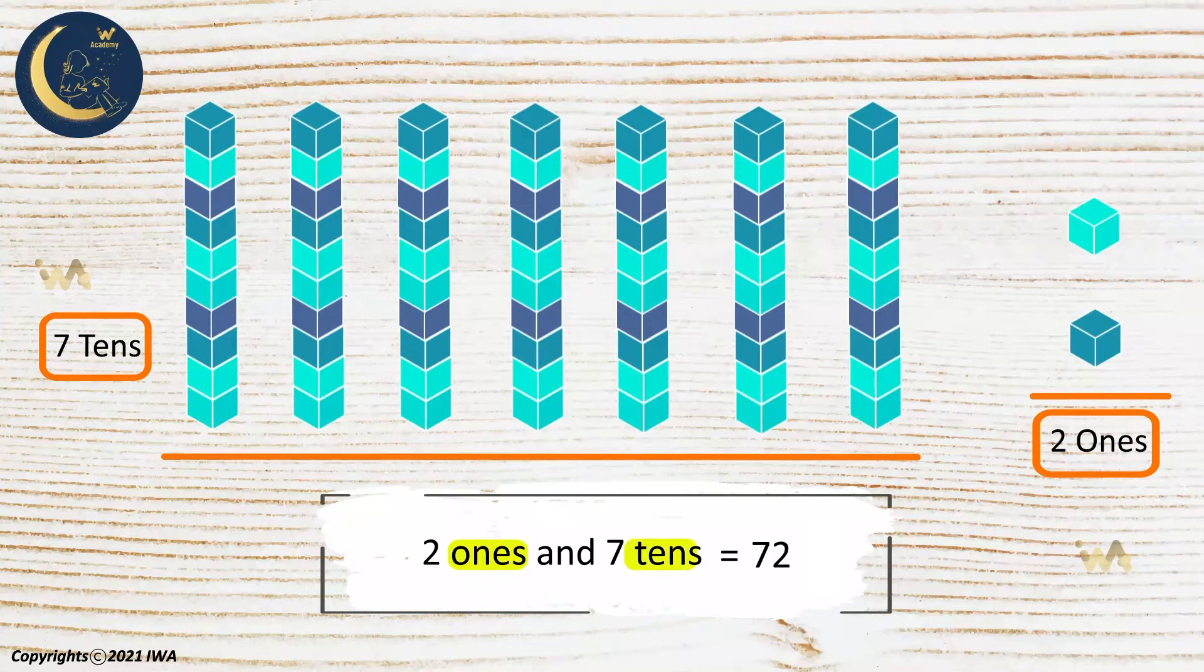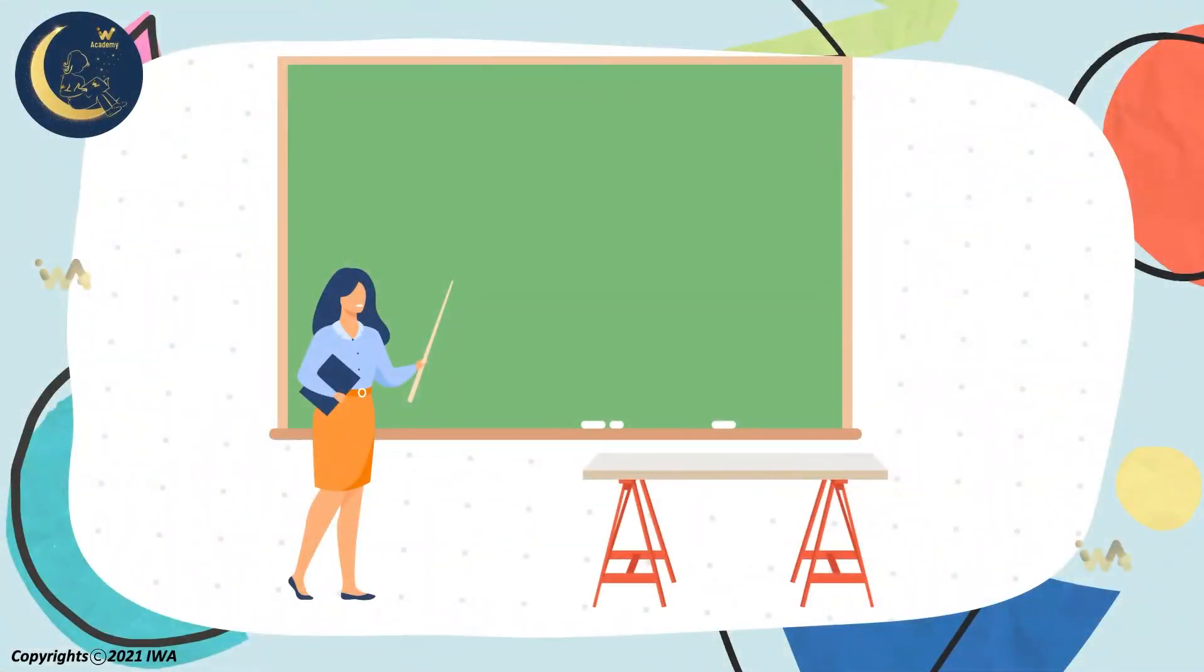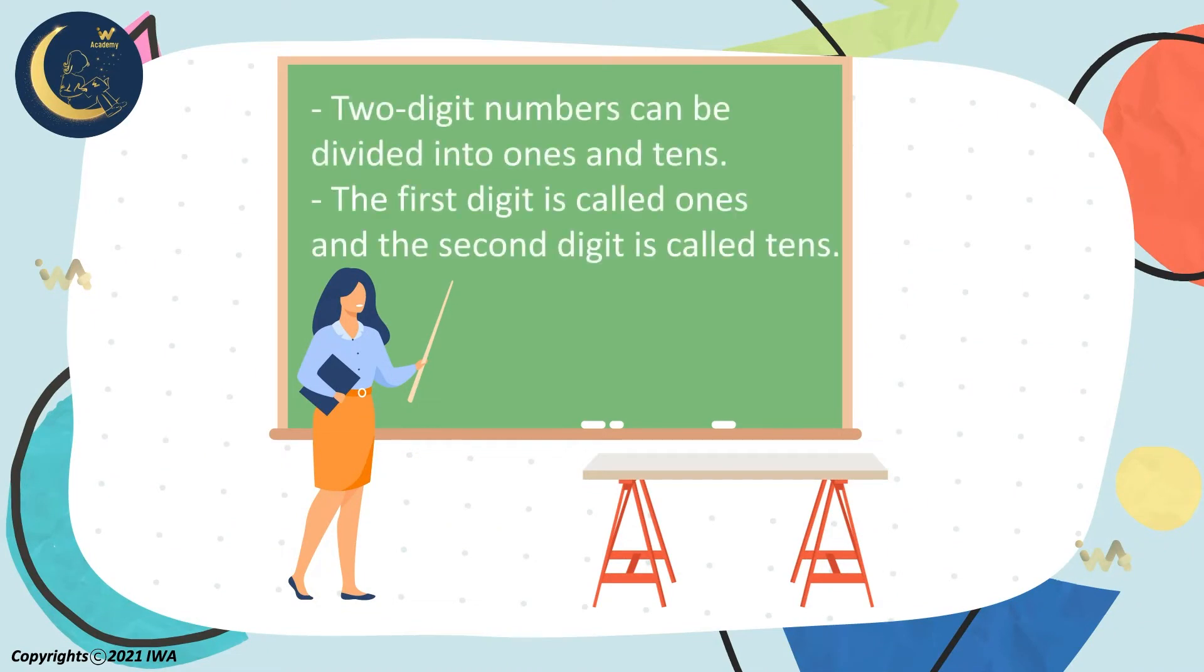Two ones and seven tens gives us the number 72. Ones, then tens. By this, my dears, we should have learned that two-digit numbers can be divided into ones and tens. The first digit is called ones and the second digit is called tens.